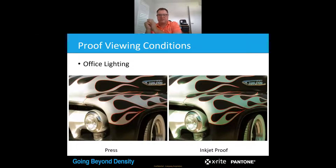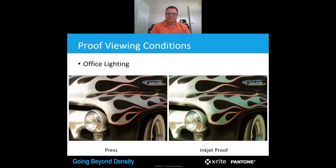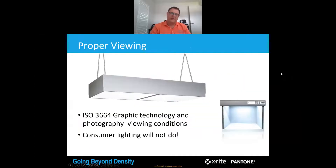Metamerism is a physical interaction of light with the object: because of the change in light source, how that light interacts with your sample is physically changing what you're seeing. You cannot do anything about metamerism — it exists. With a spectrophotometer you can measure it, but what it highlights is that you must standardise your proof viewing conditions. Having a controlled light box running with a standardised lamp is the quickest and easiest way to achieve this. You can refer to ISO 3664 graphic technologies standard for standardised viewing lighting conditions.